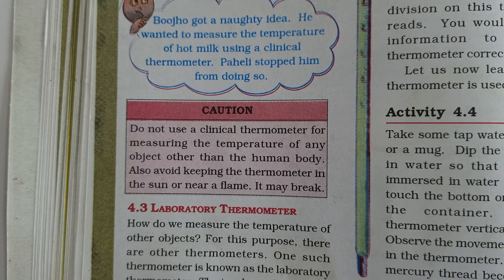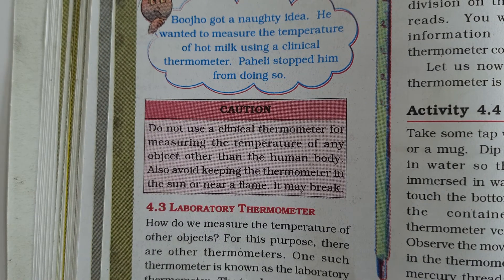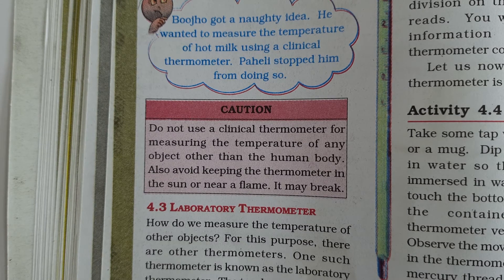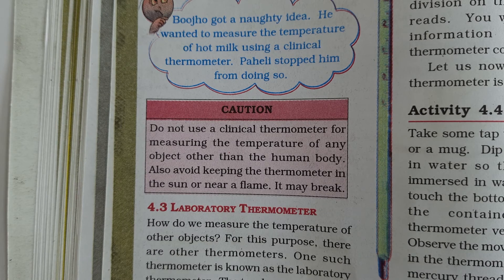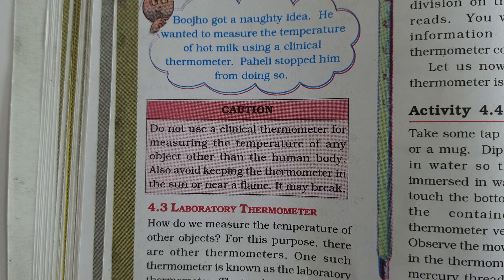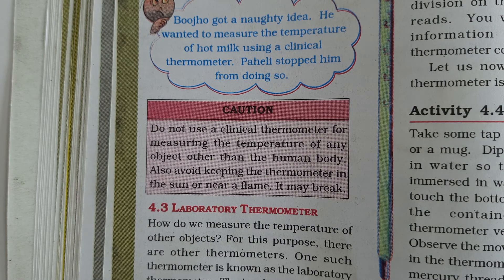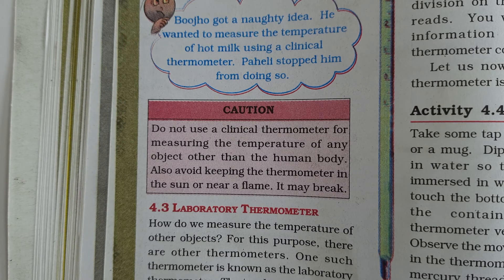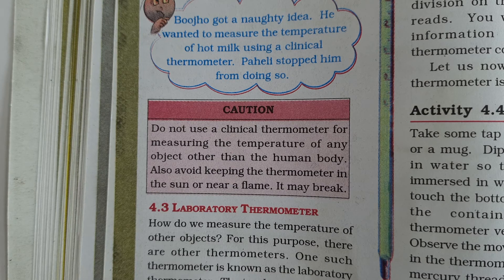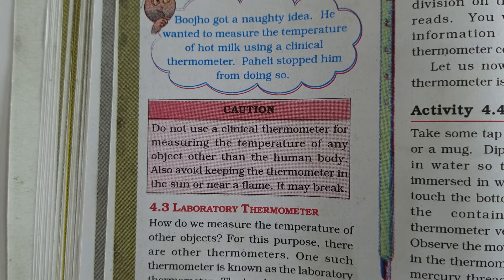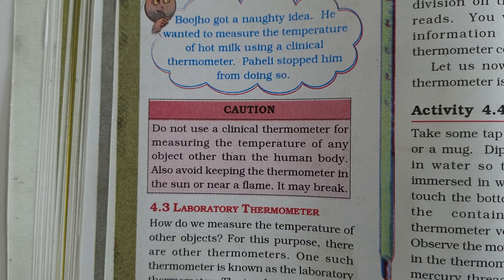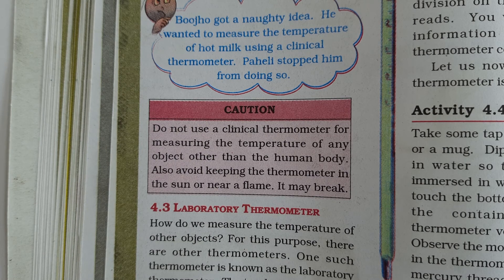Clinical thermometer sirf human body ka temperature measure karne ke liye banaya gaya hai — 35°C se 42°C range mein. Isko kabhi boiling milk ya kisi bhi garam cheez ka temperature check karne ke liye use mat karo — thermometer toot sakta hai ya chhote blast ke saath break ho sakta hai. Kabhi bhi thermometer ko direct sun ya kisi garam jagah ke paas mat rakho — isse bhi thermometer toot sakta hai.